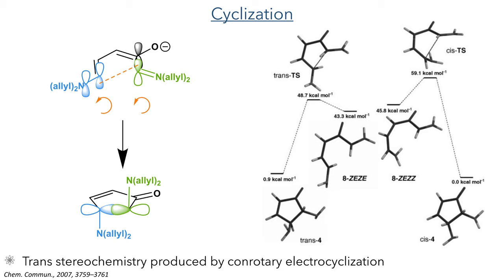Studies into this mechanism have confirmed that it goes through a Nazarov-type cyclisation. The delocalisation of the electrons across the conjugated system allows for a rapid conrotary electrocyclisation to occur. Conrotary means that the orbitals that form the new bond rotate in the same direction, allowing for the in-phase overlap of the orbitals. It is this conrotary motion that produces the trans-stereochemistry between the two amine groups.